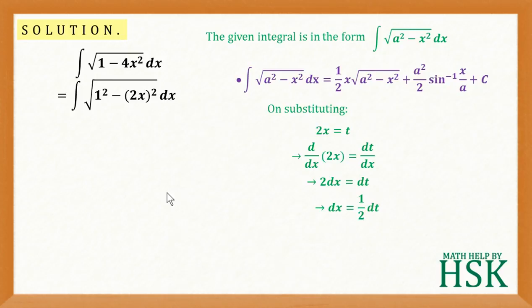So, dx would be replaced by 1 by 2 dt and 2x is going to be replaced by t. So, I am going to get this as 1 by 2 times integration of 1 square minus t square with respect to t.